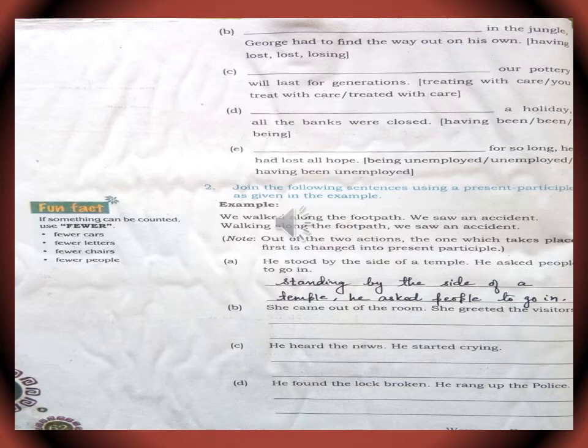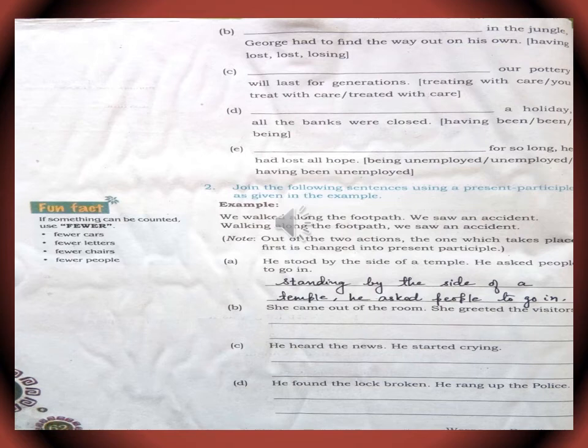Now, join the following sentences using a present participle as given in the examples. Example: we walked along the footpath, we saw an accident — becomes: walking along the footpath, we saw an accident. Note: out of these two actions, the one which takes place first is changed to present participle. Second example: he stood by the side of a temple, he asked people to go in — becomes: standing by the side of the temple, he asked people to go in. In the same way, dear students, join the following sentences using present participle.